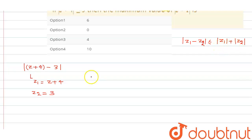So basically this becomes what, this mod of z1, this z1 minus z2, this less than equal to mod of z plus four plus mod of three.